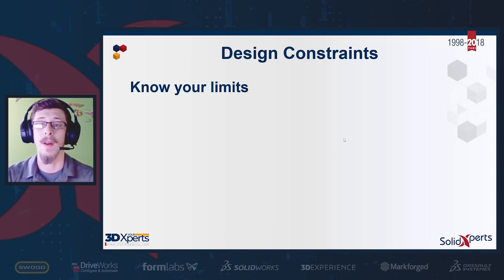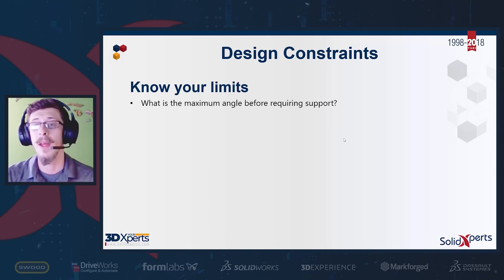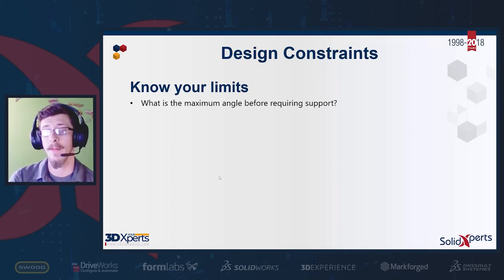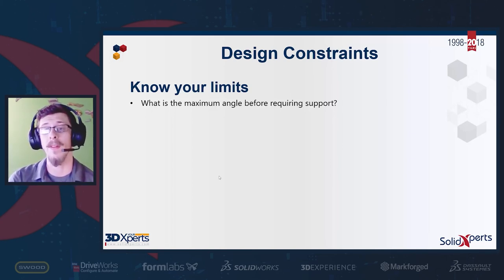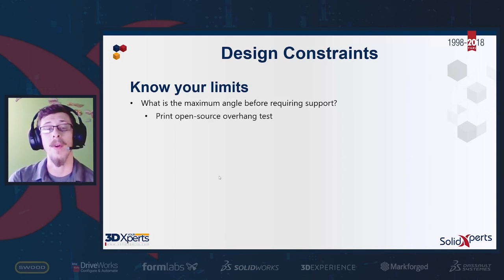One of those limits is going to be the maximum angle you can print before it requires a soluble or mechanical support. If a manufacturer hasn't shared what the overhang angle is, or at what point supports are enabled, you can always identify this on your own by printing an overhang test.